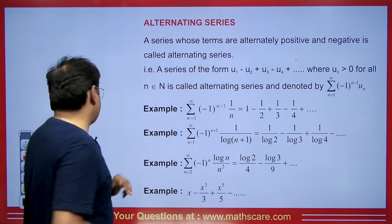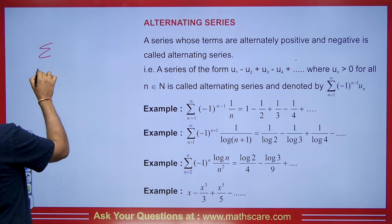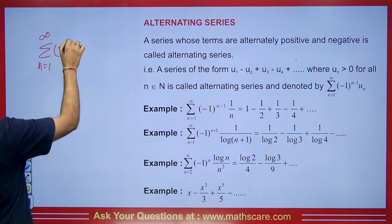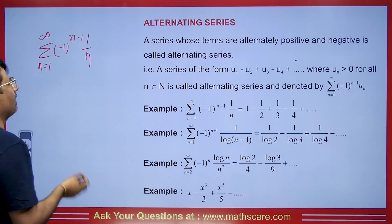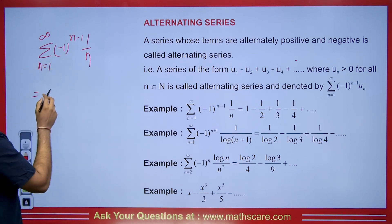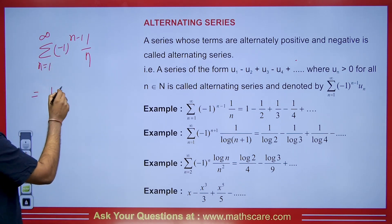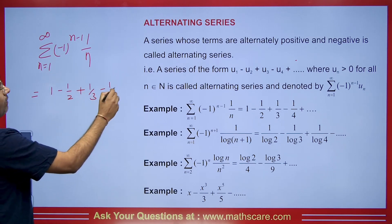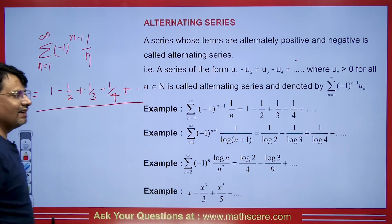Let's take an example. Suppose we have a series: summation n equals 1 to infinity of minus 1 to the power n minus 1 times 1 upon n. When we put n equals 1, we get 1. For n equals 2, we get minus 1 by 2, then plus 1 by 3, minus 1 by 4, and so on. So here we get an alternating series.